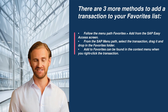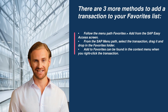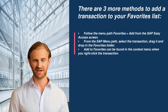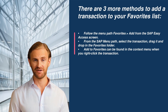There are three more methods to add a transaction to your favorites list. Follow the menu path Favorites, Add from the SAP Easy Access screen. From the SAP menu path, select the transaction, then drag it and drop it in the Favorites folder. Add to Favorites can also be found in the context menu when you right-click the transaction.